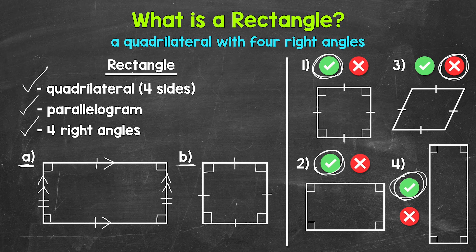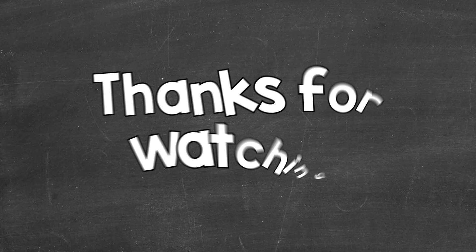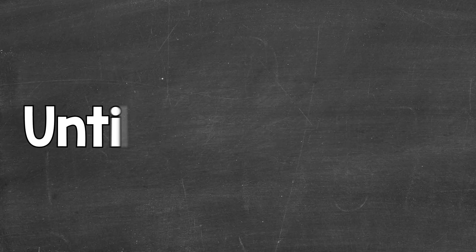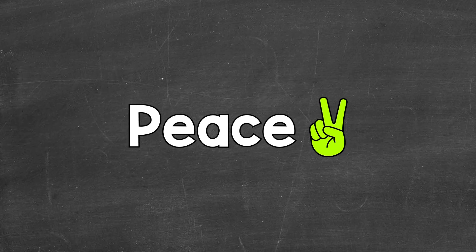So there you have it — a basic overview of what a rectangle is. Just remember, a rectangle is a quadrilateral with four right angles. I hope that helped. Thanks so much for watching. Until next time, peace. Bye.